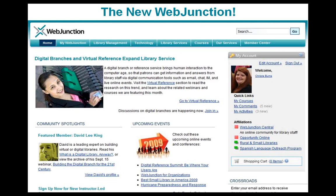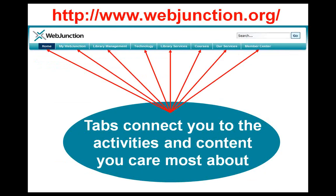One of the big changes they made was how you navigate WebJunction. Depending on when you last used WebJunction or looked at it, it may look completely different. One of their big changes was adding these tabs, which they've rearranged and tweaked since the new design came out last year. These tabs are all the main areas people are going to — they try to gather things into different areas so you can quickly get to the sections you want to use. The URL for WebJunction is www.webjunction.org.